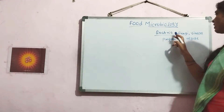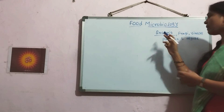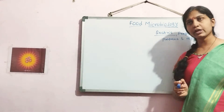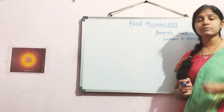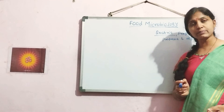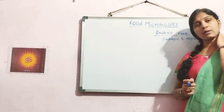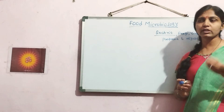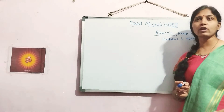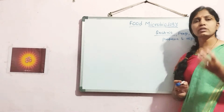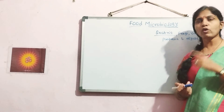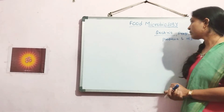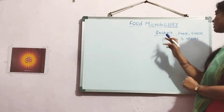Within bacteria, there may be gram-positive bacteria such as Bacillus species and Clostridium species, and gram-negative bacteria such as Pseudomonas species and Escherichia coli, which are responsible for the contamination of food samples.